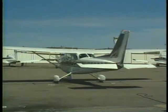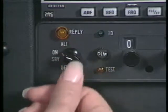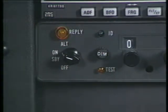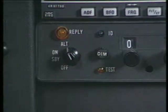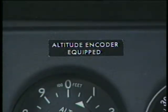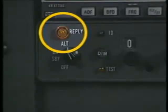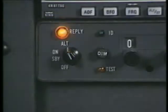When it is turned to the standby position, the unit is on but it doesn't reply to interrogation signals. This position helps the transponder warm up before you need to use it. Sometimes the controller may ask you to select standby to reduce the clutter on the radar screen. When you select ON, the transponder begins to reply to interrogations from radar sites. This setting is sometimes referred to as the normal or Mode A setting. The altitude, or Mode C setting, is selected by turning the knob to ALT. If your aircraft has automatic altitude reporting equipment, your altitude will be displayed on the controller's screen.